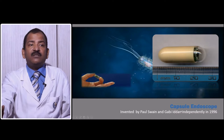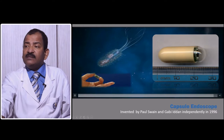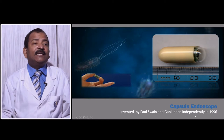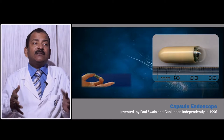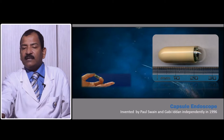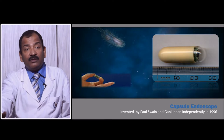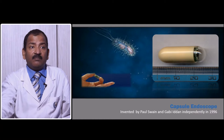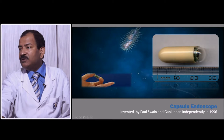Capsule endoscopy was once thought to have a very dramatic effect when invented. Interestingly, it was independently invented by two people at the same time — Paul Swann and Gabby Eden — both in 1996. Both came for a patent at the same time from different places, and it was a miracle that two persons invented the same thing independently. Both inventions were authenticated because their research methodologies and data were different and both were correct.